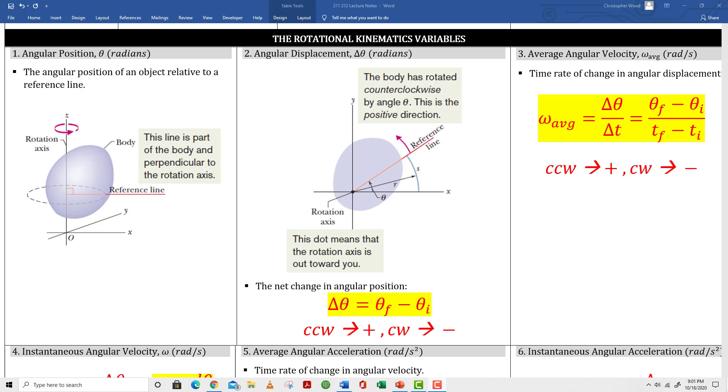Let's look at the rotational kinematics variables. These are analogous to the translational kinematics variables that you studied in chapters 2 and 4, 1-dimensional and 2-dimensional linear or translational kinematics.